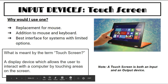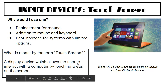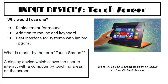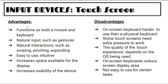A touch screen is a replacement for a mouse, or used in addition to a mouse and keyboard — best interface for systems with limited options. It's a display device that allows the user to interact with the computer by touching areas on the screen. A touch screen is both an input and an output device: input because you're touching it like a stylus or keyboard, output because you can see what is happening on the screen.